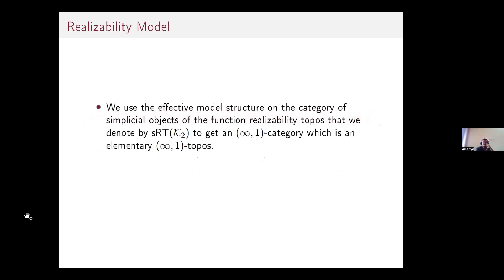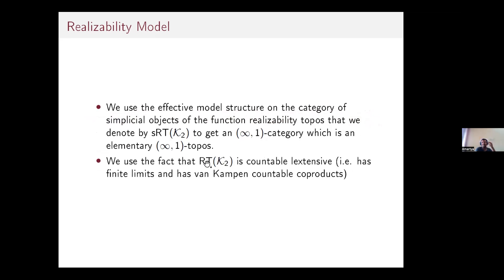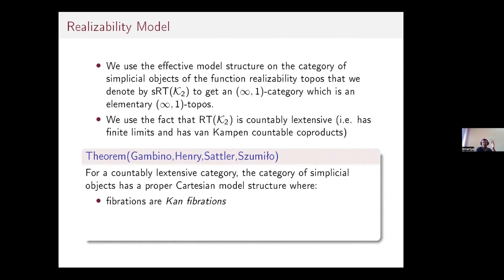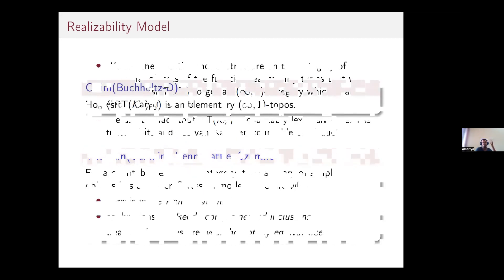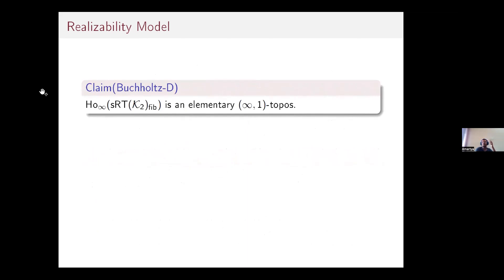The basic idea is to use the effective model structure on the category of simplicial objects of the function realizability topos. We use the fact that this topos is countably extensive — meaning it has finite limits and van Kampen countable co-products. By a result of Fiore–Paoli or Riehl–Shulman, for a countably extensive category the category of simplicial objects carries a proper Cartesian model structure where fibrations are Kan fibrations, cofibrations are complemented inclusions, and weak equivalences are weak homotopy equivalences.